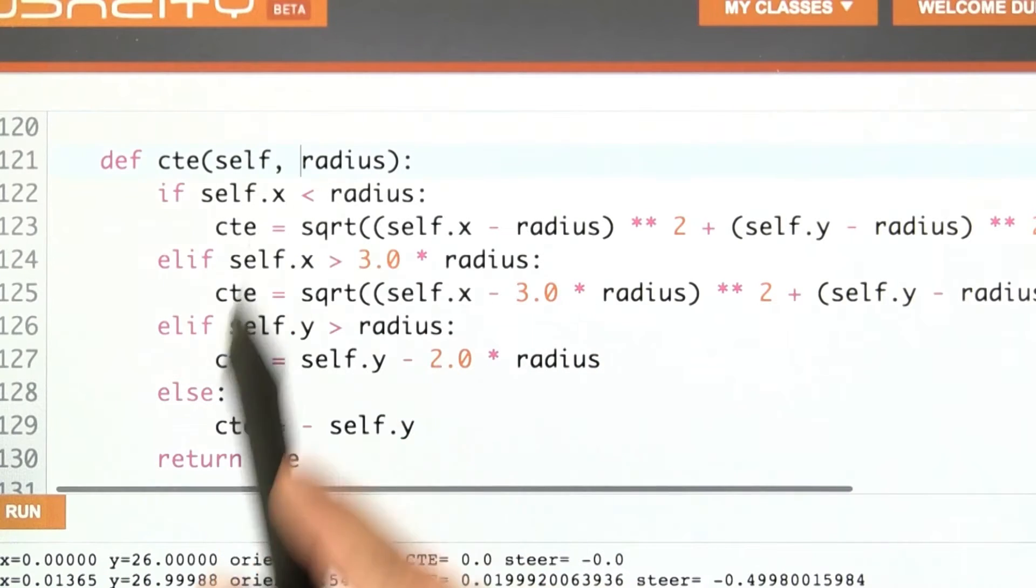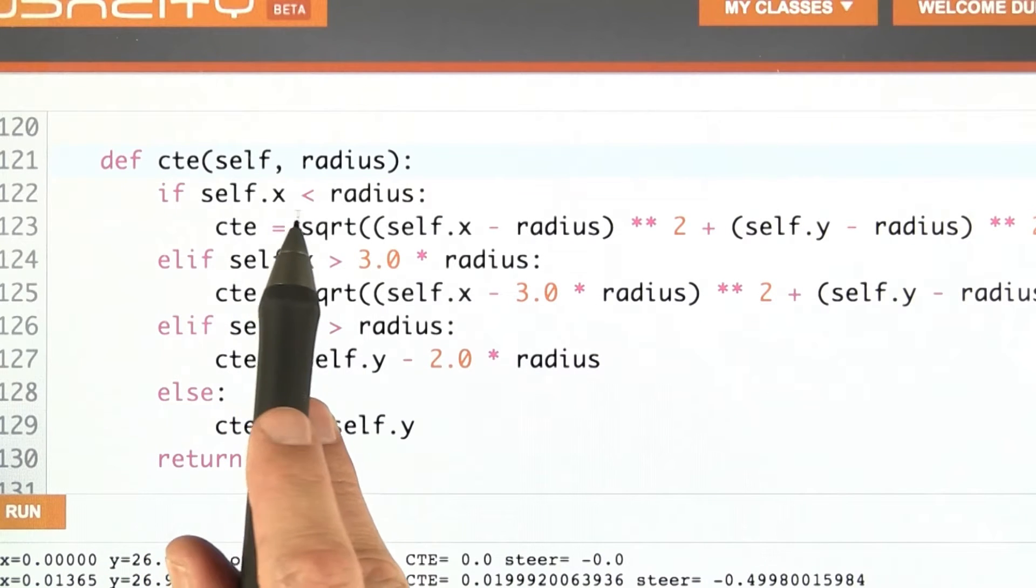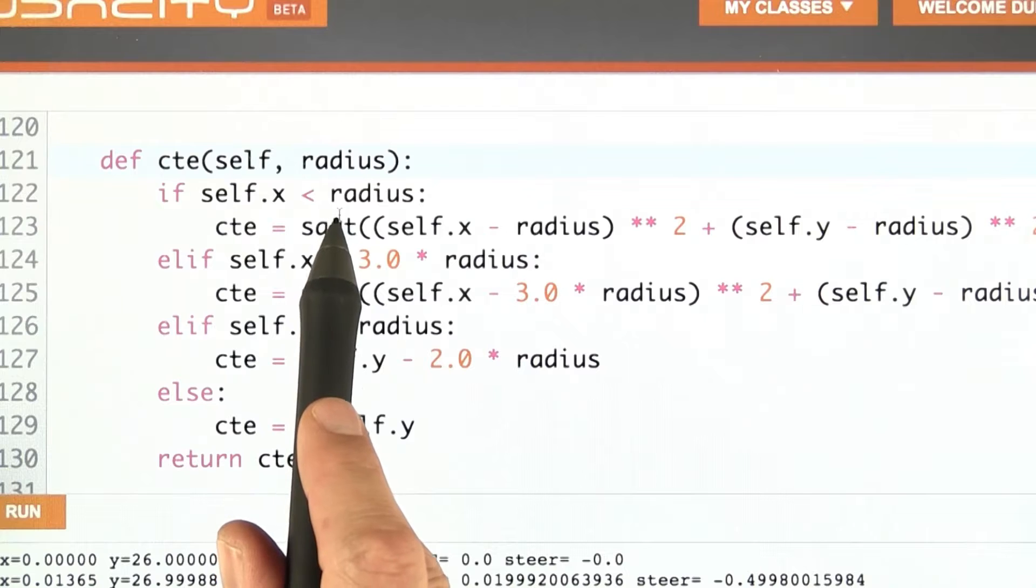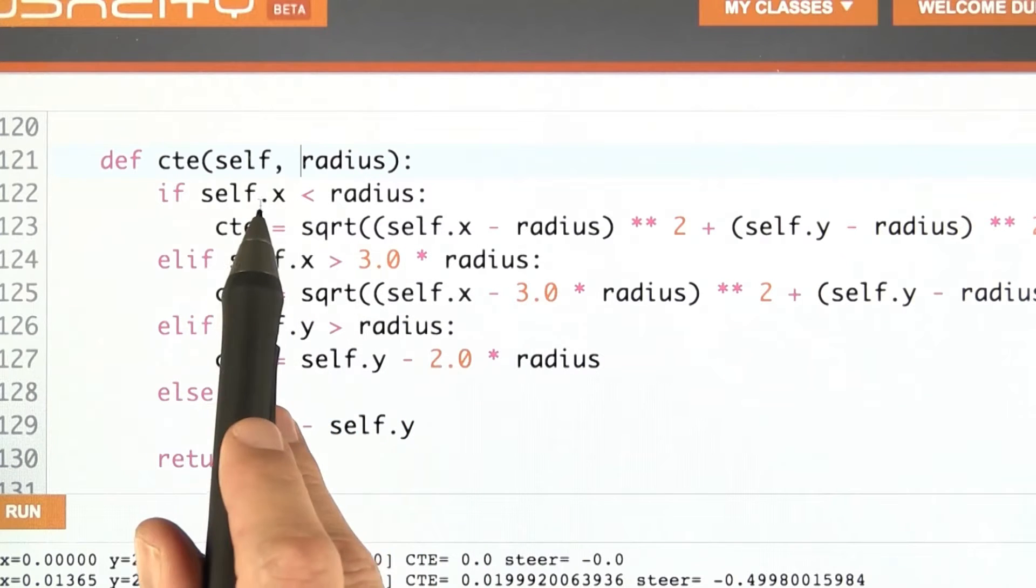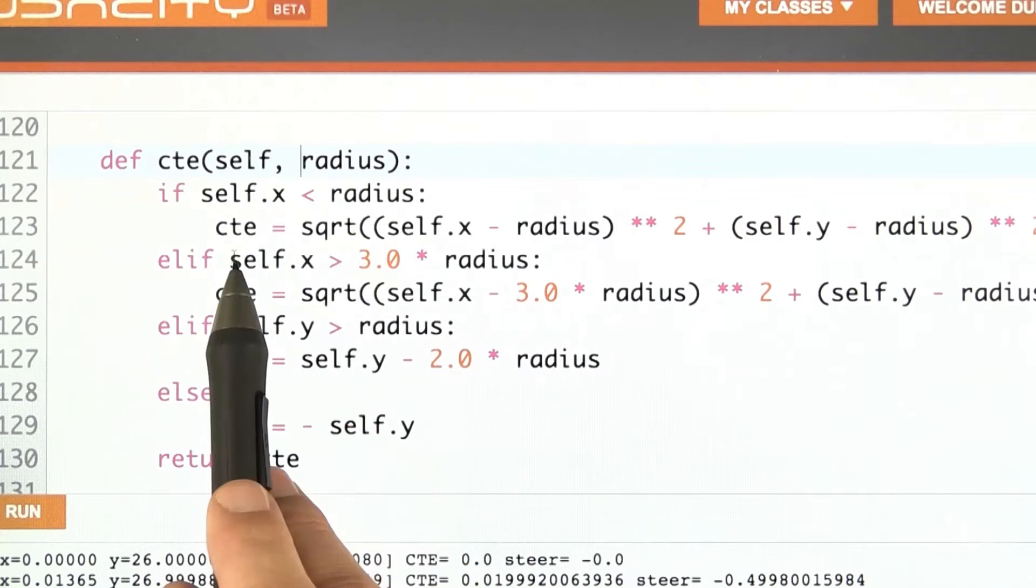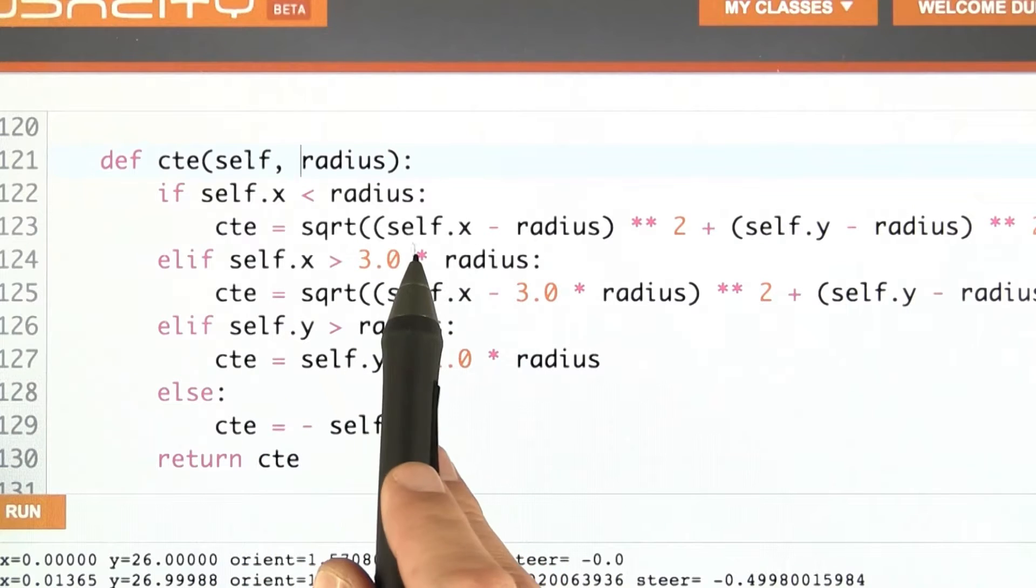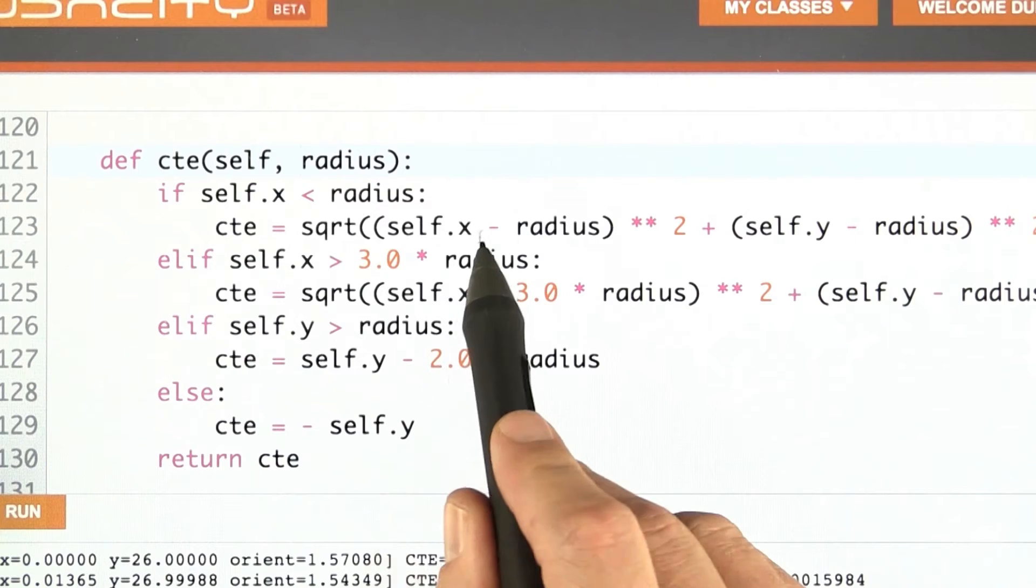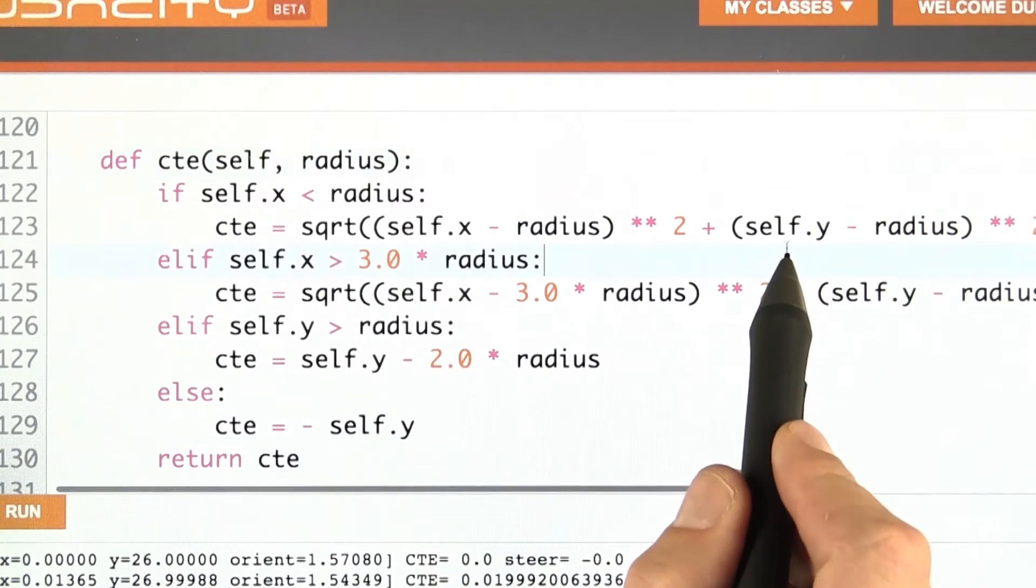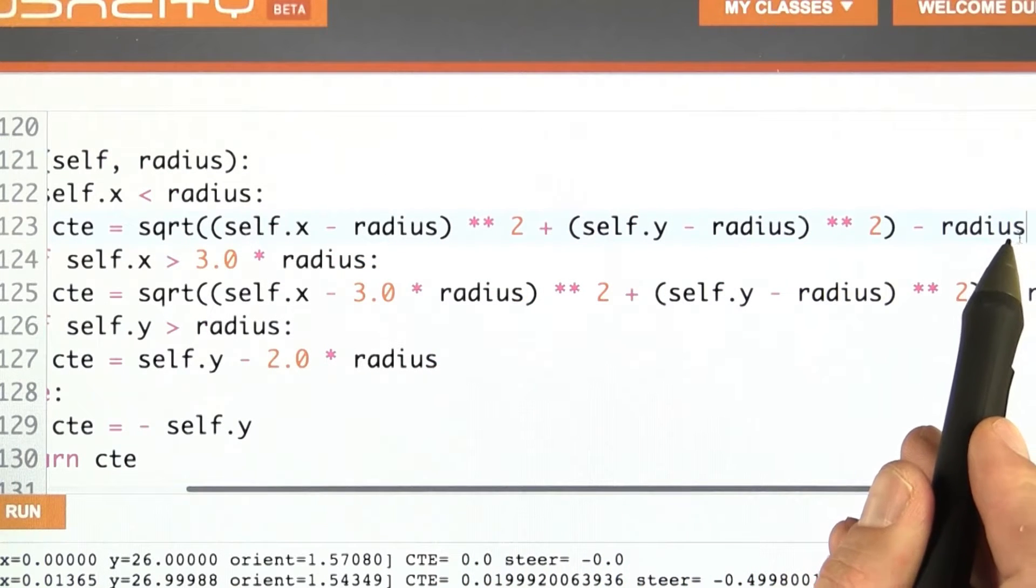Here's my solution. We have four cases. On the left side, if I'm on the left side of the race course, defined as x is smaller than radius, then my cross-track error is defined by the distance to the circle centered at radius, radius, minus the radius itself. This will be zero if I'm exactly on the circle.